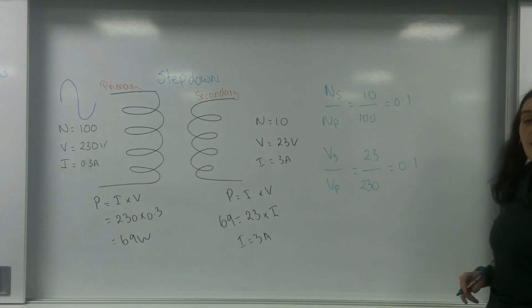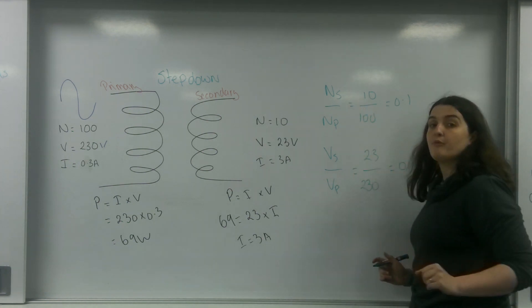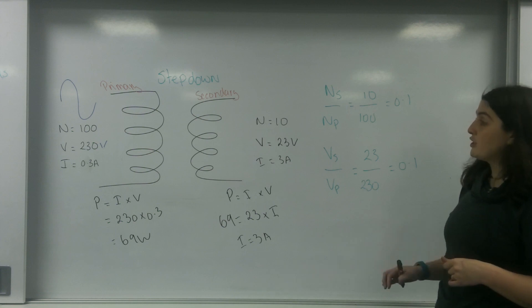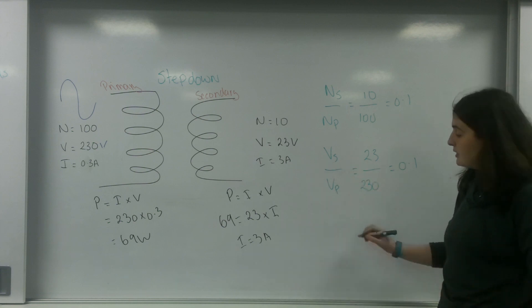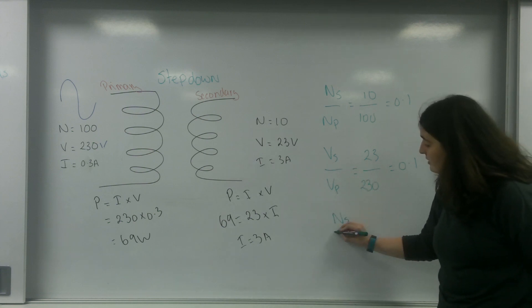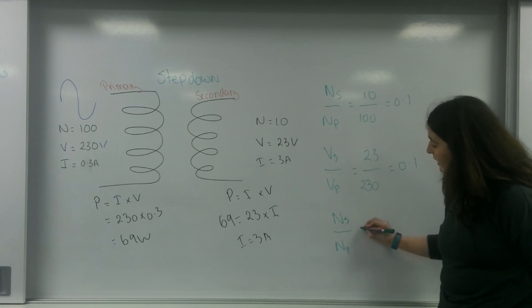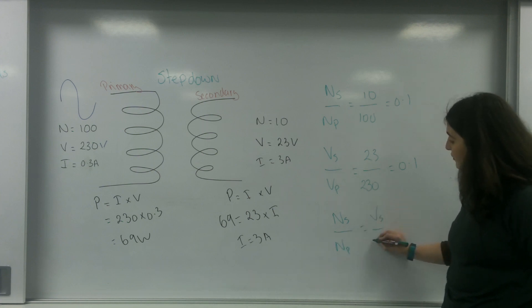So this ratio between my secondary and primary coils is also equal to the ratio of my secondary and primary voltage. So I can write NS over NP equals VS over VP.